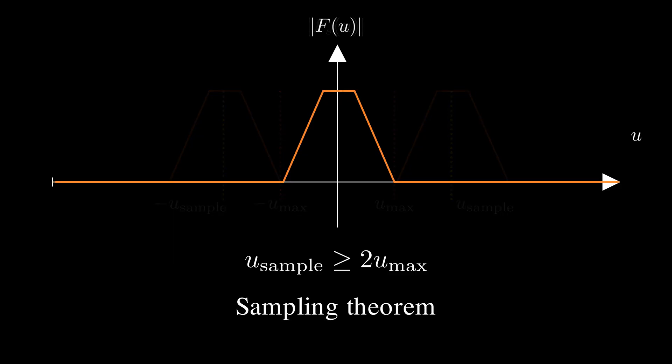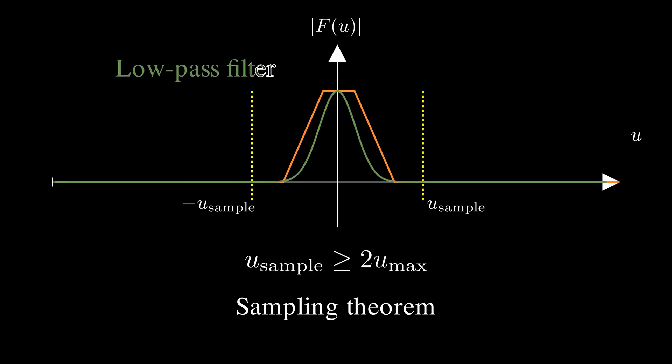Now what if we need to reduce the sampling rate? For example, I need to shrink the painting to fit it into my slide. Since aliasing happens due to high frequency components, we can prevent it by applying a low-pass filter like a Gaussian filter before sampling.